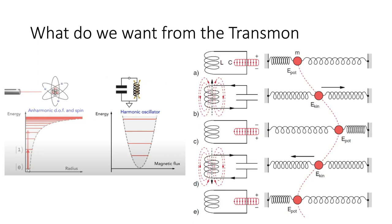To get from the zero state to the one state, you need a certain energy. And to get from the one state to the two state, you need less energy. So if you apply this energy twice, you would go up to a place where there is no state to enter. This is how you can isolate the zero and one states.